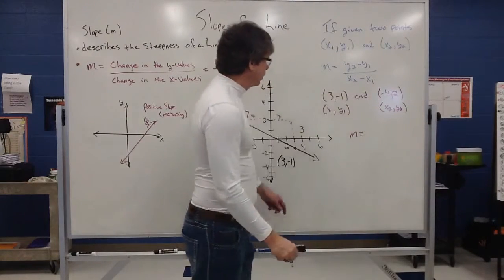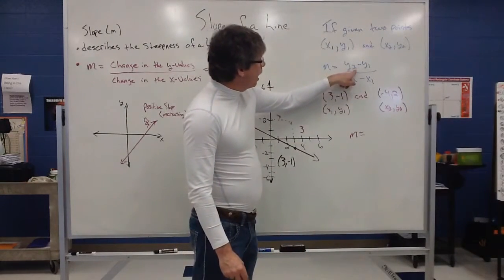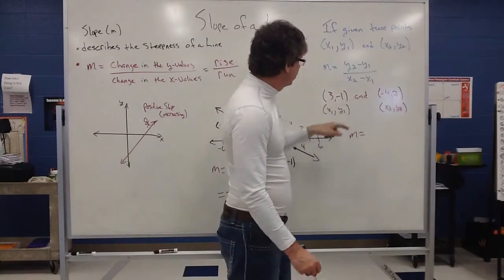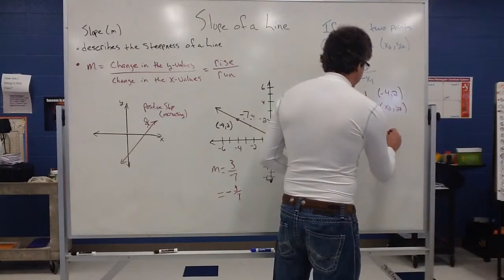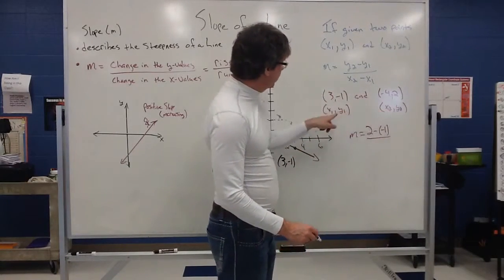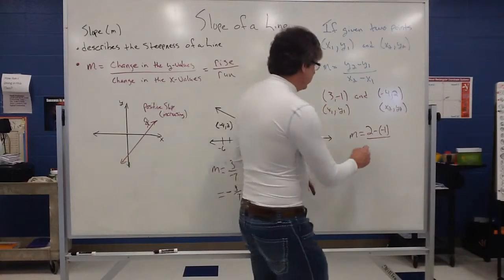my formula says go y2 minus y1. So I have to go from y2 to y1. So that's 2, take away a negative 1. On the bottom, we have x2 minus x1. So that's going to be a negative 4, take away a 3.